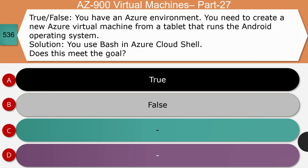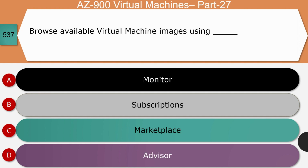Question 16: True or false — you need to create a new Azure VM from a tablet running Android, and the solution is to use Bash in Azure Cloud Shell. Does it meet the goal? The answer is true. Azure Cloud Shell is an interactive, browser-accessible shell for managing Azure resources. It provides the flexibility to choose between Bash or PowerShell, so it can be used from a tablet running Android.